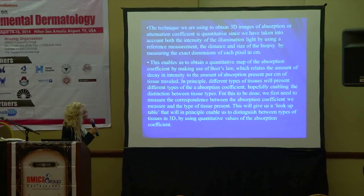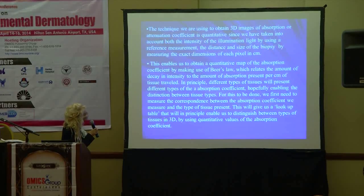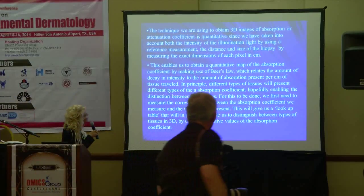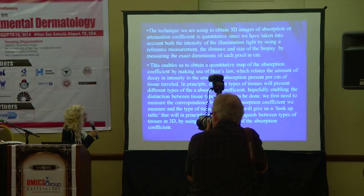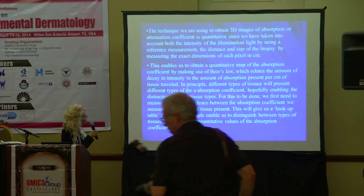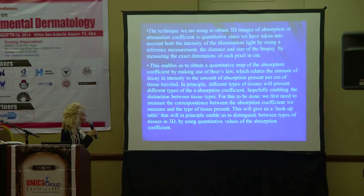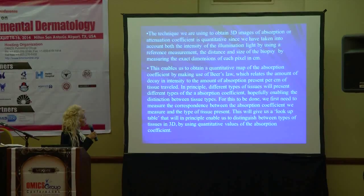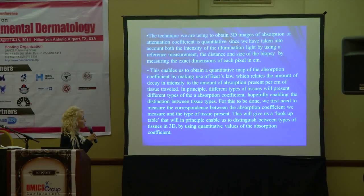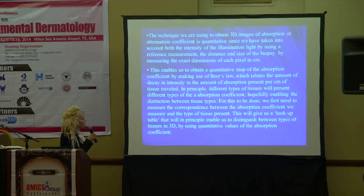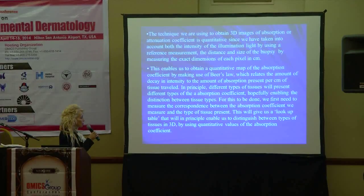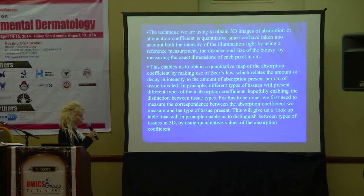Our technique to obtain 3D images of absorption or attenuation coefficient is quantitative. We have taken into account both the intensity of the illumination using a reference measurement. This enables us to obtain a quantitative map of absorption coefficient using Beer's law, which relates the decay in intensity to the amount of absorption present per centimeter of tissue traveled. Different types of tissues will present different absorption coefficients, hopefully enabling the distinction between tissue types. We first need to measure the correspondence between the absorption coefficient and the type of tissue present, which gives us a lookup table to distinguish between tissue types in 3D using quantitative values of absorption coefficient.